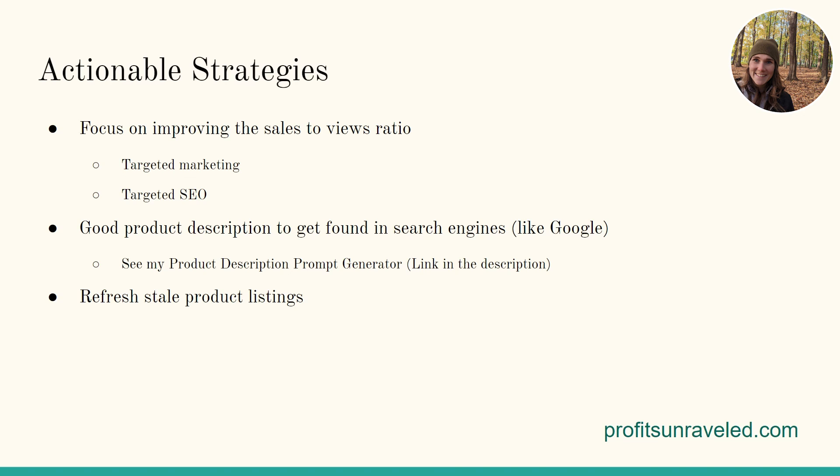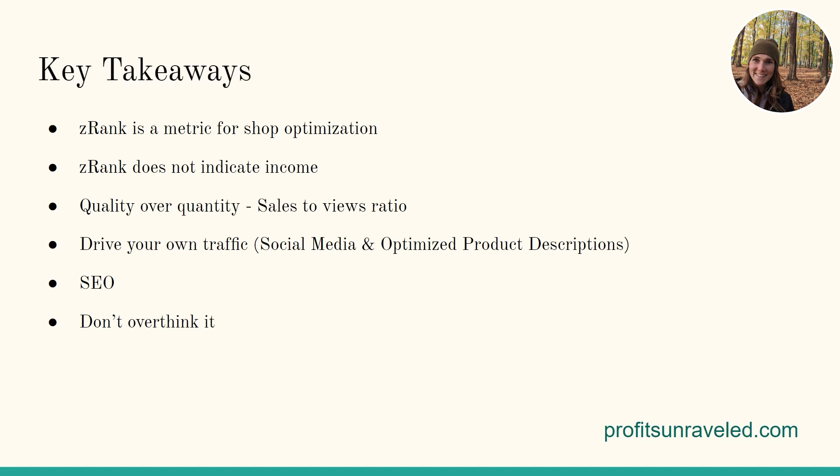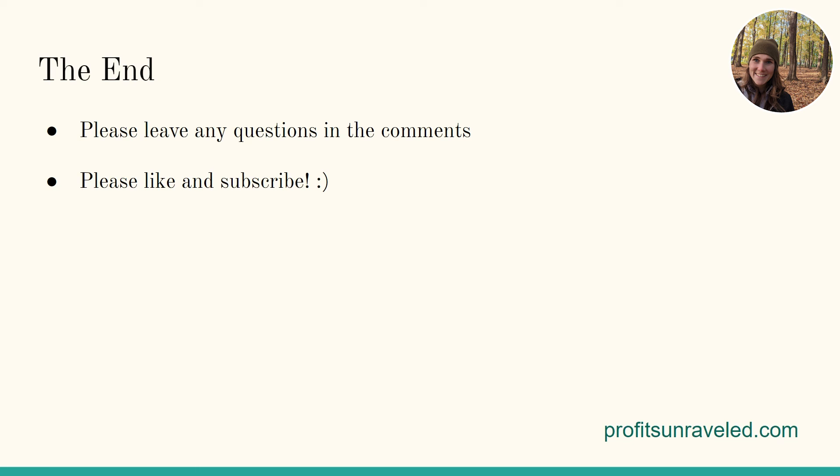The last actionable strategy is refreshing stale product listings. If your listings aren't getting views, or they're getting views but not sales, decide whether you need to update the SEO on those products or hide and delete them from the marketplace. Key takeaways: Z rank is a metric for your shop optimization — it does not indicate how much money you're making on Zazzle. Focus on quality over quantity, think about your sales-to-views ratio and sales-to-products ratio, drive your own traffic through social media and optimized product listings, and use good SEO in your titles, descriptions, and tags. Last but not least: don't overthink it. Your Z rank doesn't really matter that much — as long as you've hit that four, you're good to go.